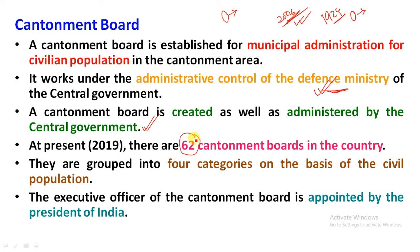Let us look at table number 39.2. The categories are based on civilian population size. Category 1 is 50,000 and above. Category 2 is 10,000 to 50,000. Category 3 is 2,500 to 10,000. Category 4 is below 2,500. The Cantonment Board is partially elected and partially nominated.